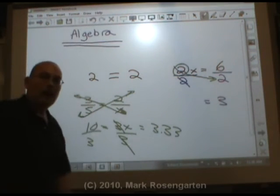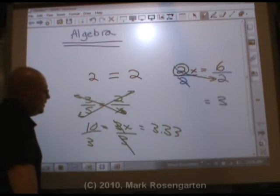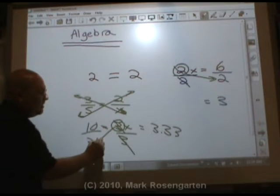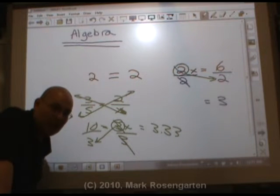Take a look at the topic on rounding if you want to know about how to round this. But again, notice that I got rid of that 3 in the numerator by shoving it in the denominator of the other side. We call that selective cross multiplying.